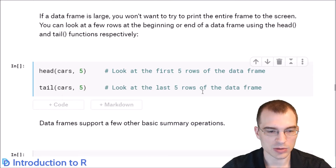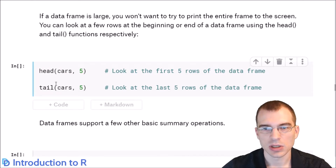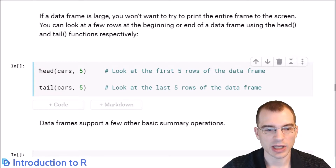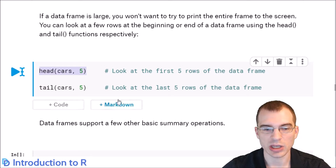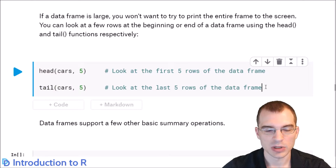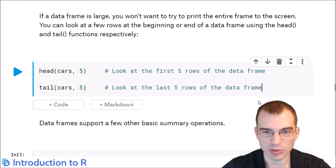You can also use the head and tail functions. These break off the first few or the last few rows of a dataset. Here we're getting the first five rows of mtcars using head, and the last five rows using tail. That's a quick way of looking at a few rows without printing the entire dataset to the screen.